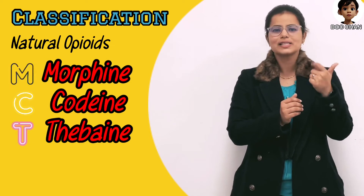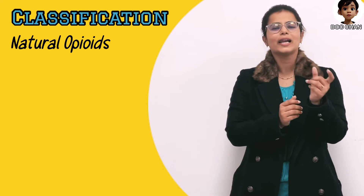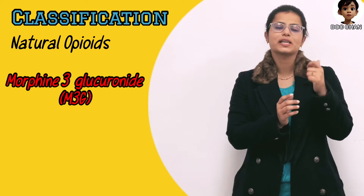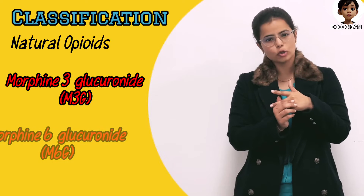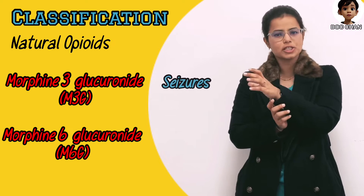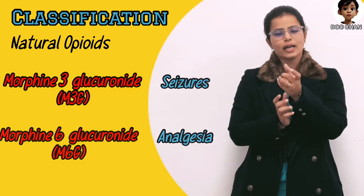M for morphine, C for codeine, T for thebaine. I would like to add a line about morphine here: M3G — morphine-3-glucuronide — and morphine-6-glucuronide. M3G will cause seizures, while M6G causes analgesia.